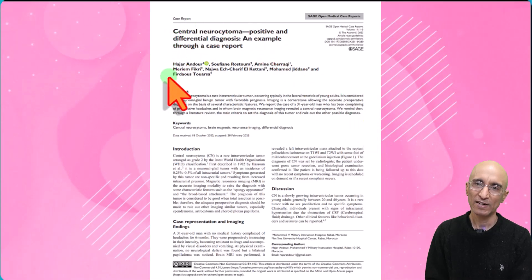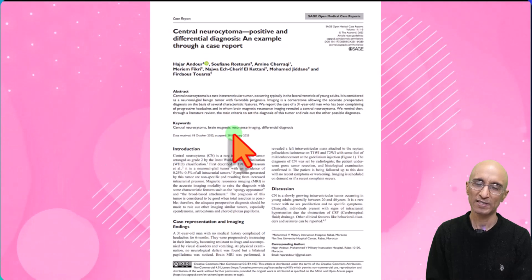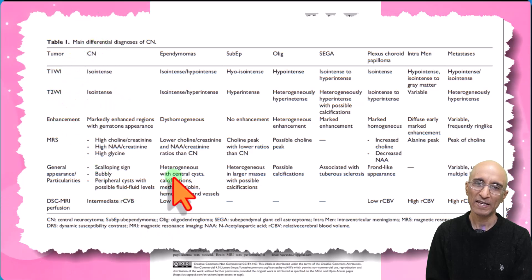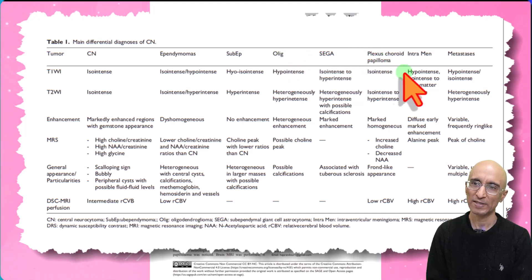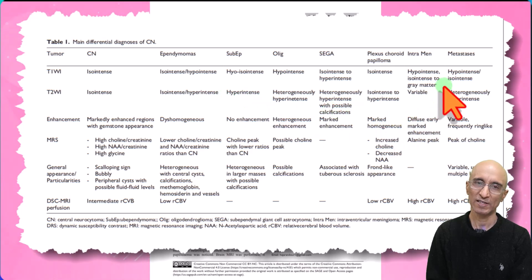This article nicely describes the differential diagnosis for a patient with potential central neurocytoma. In typical demographics and imaging appearances we can make the diagnosis of central neurocytoma. Other important diagnoses to consider would be ependymomas, subependymomas, oligodendrogliomas, subependymal giant cell astrocytomas, choroid plexus papilloma, intraventricular meningioma, and metastasis. You can refer to this article for the various imaging findings of these potential differential diagnostic lesions.